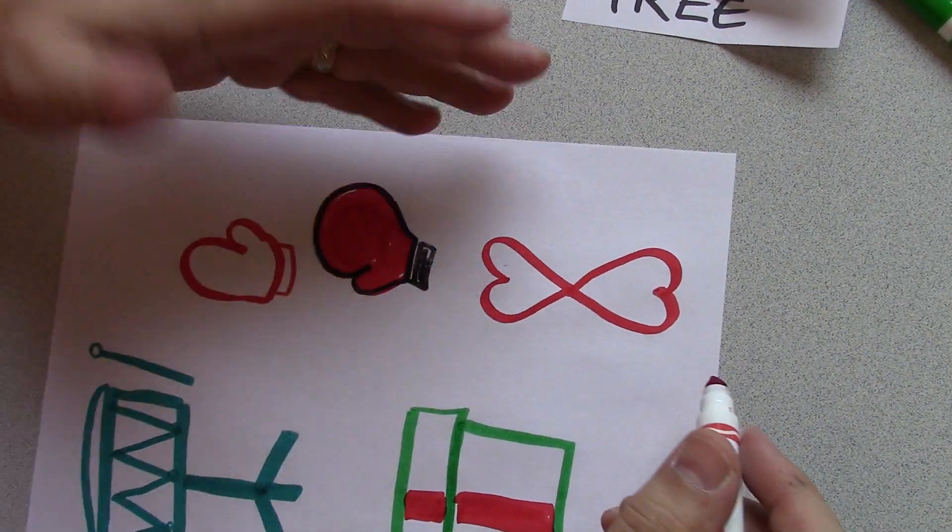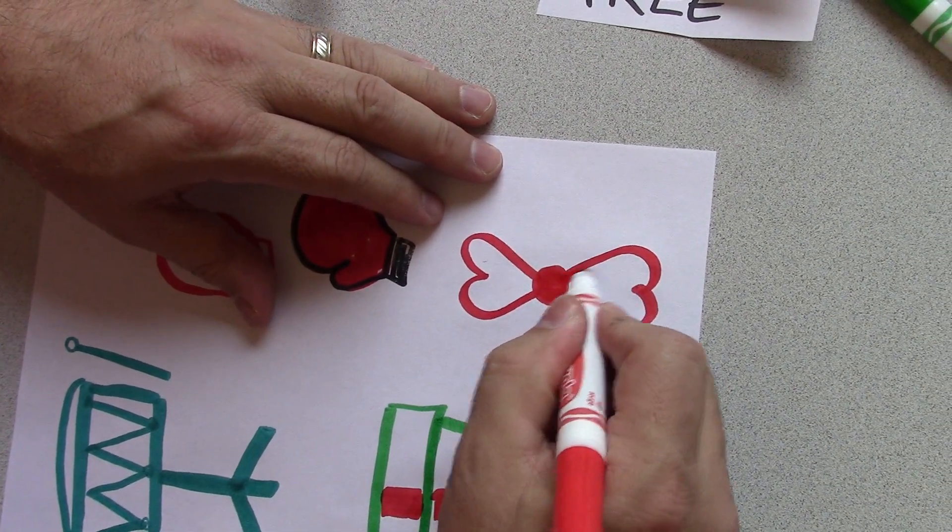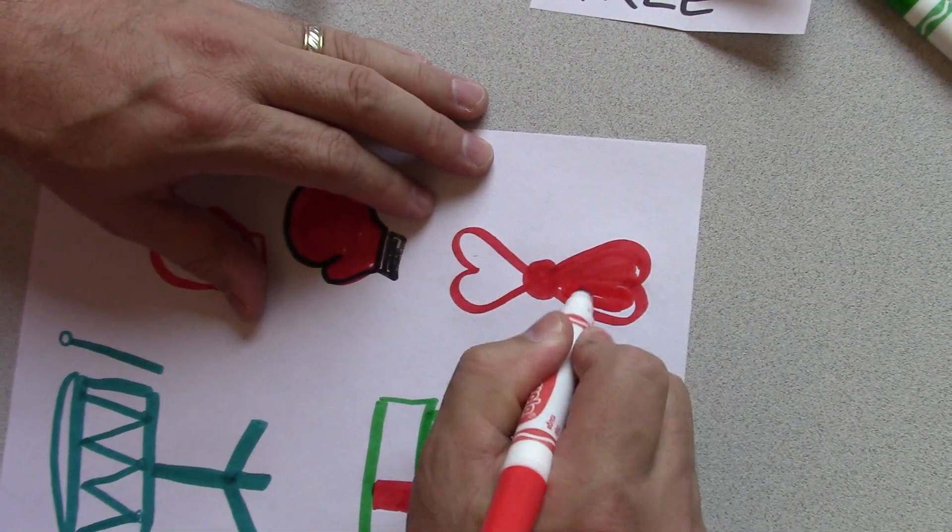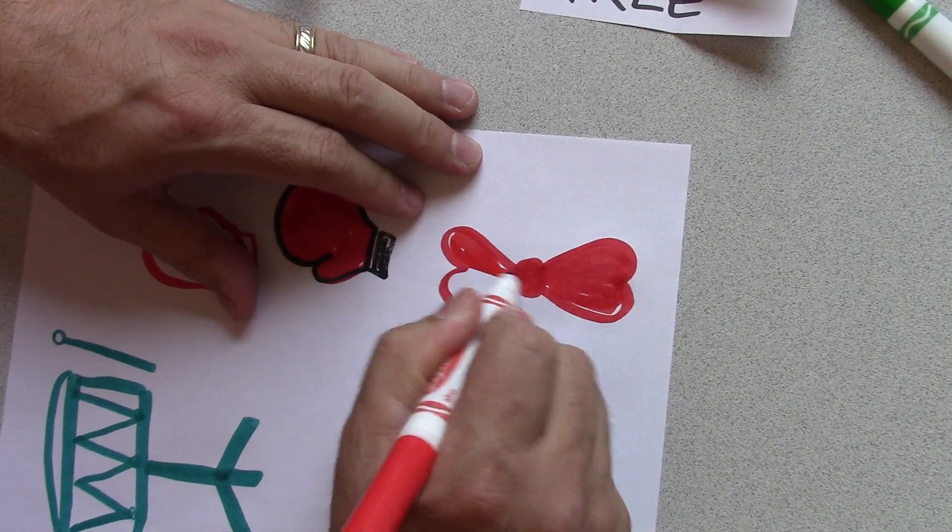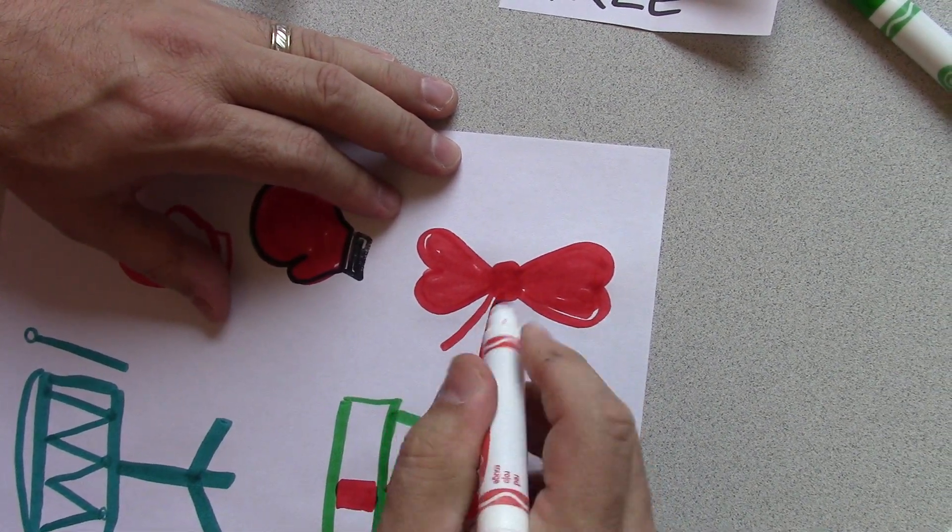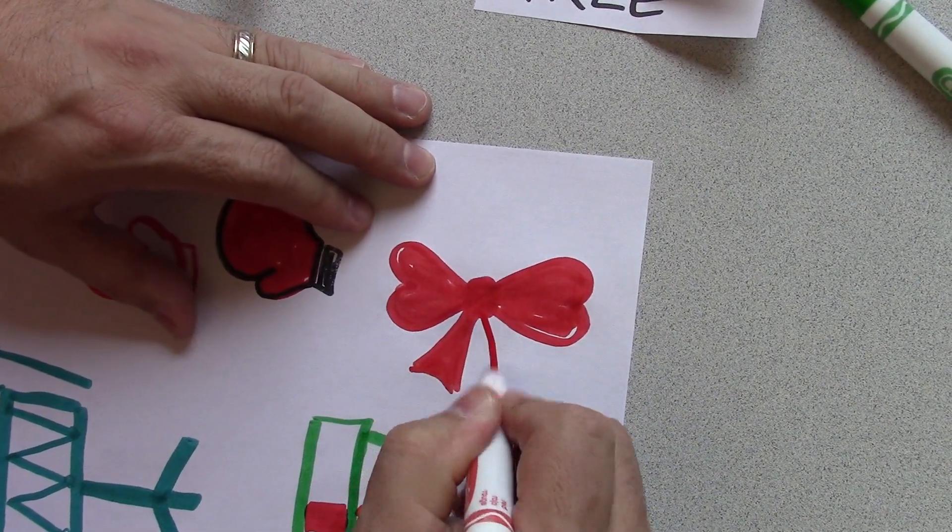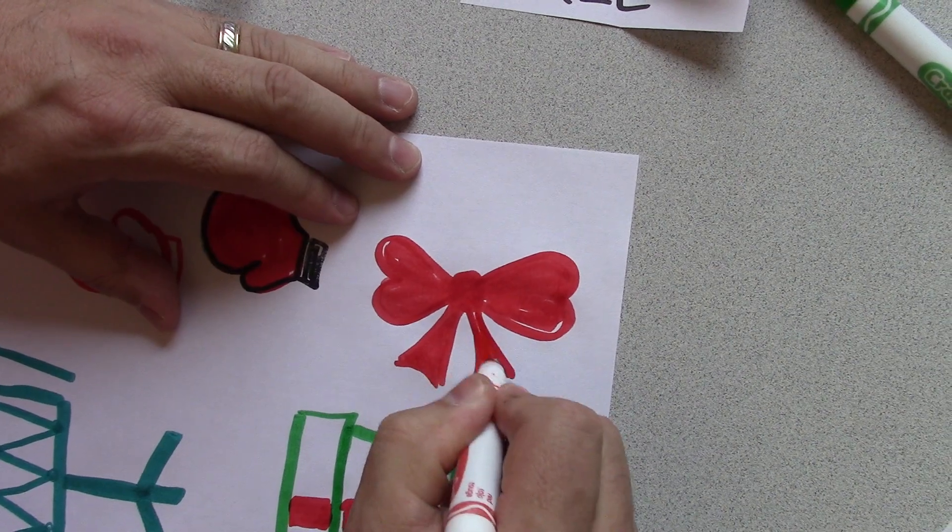Boop. Now I'm going to put it on its side. Your bow's almost done. Put a little circle in the middle. You can go back and color your bow in if you want to. And then come down here and put the ribbon like so.